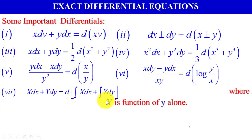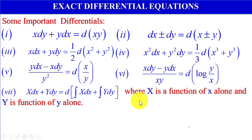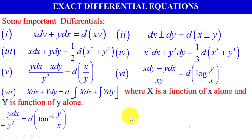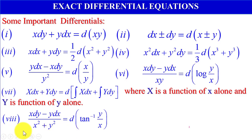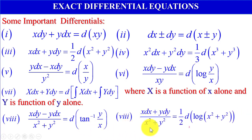Seventh, x dx plus y dy equals d of the sum of integration of x dx plus integration of y dy, where x is a function of x alone and y is a function of y alone. Eighth, x dy minus y dx divided by (x squared plus y squared) equals d(tan inverse(y/x)). Ninth, x dx plus y dy divided by (x squared plus y squared) equals half of d(log(x squared plus y squared)).